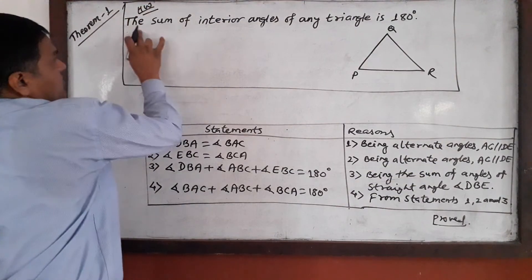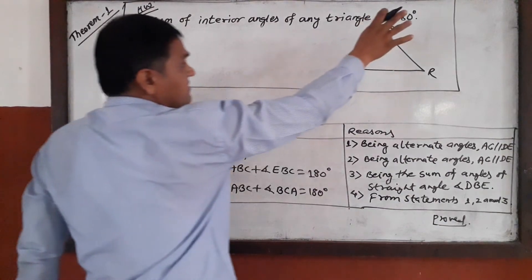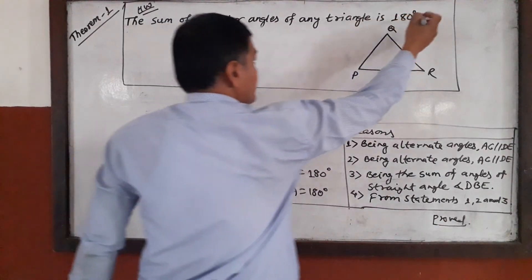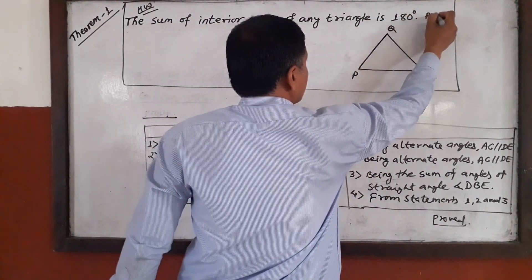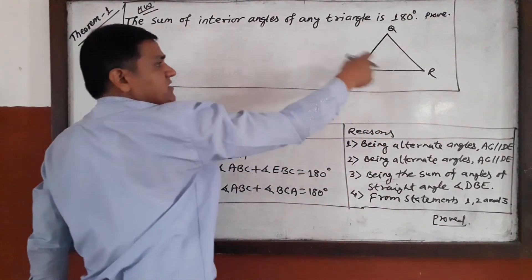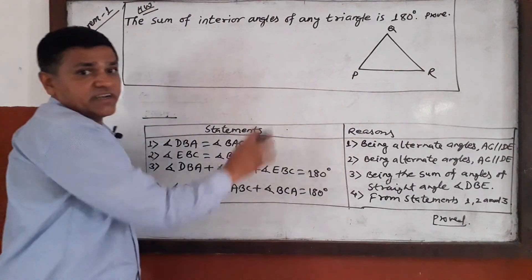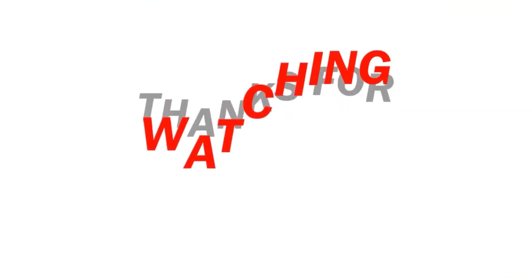The sum of interior angles of any triangle is 180 degrees — proved. You can take triangle PQR; do not take ABC. Thank you.